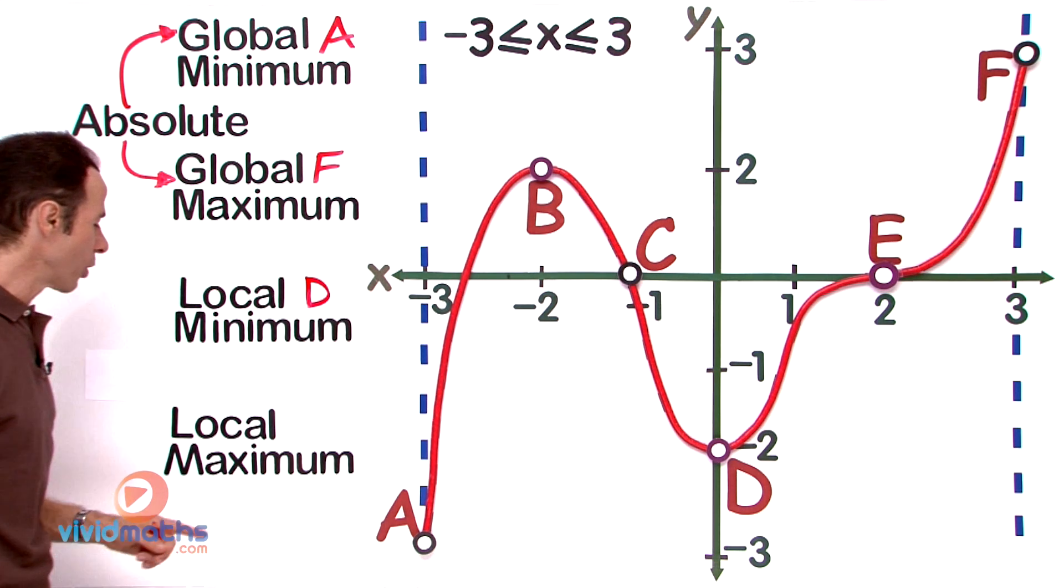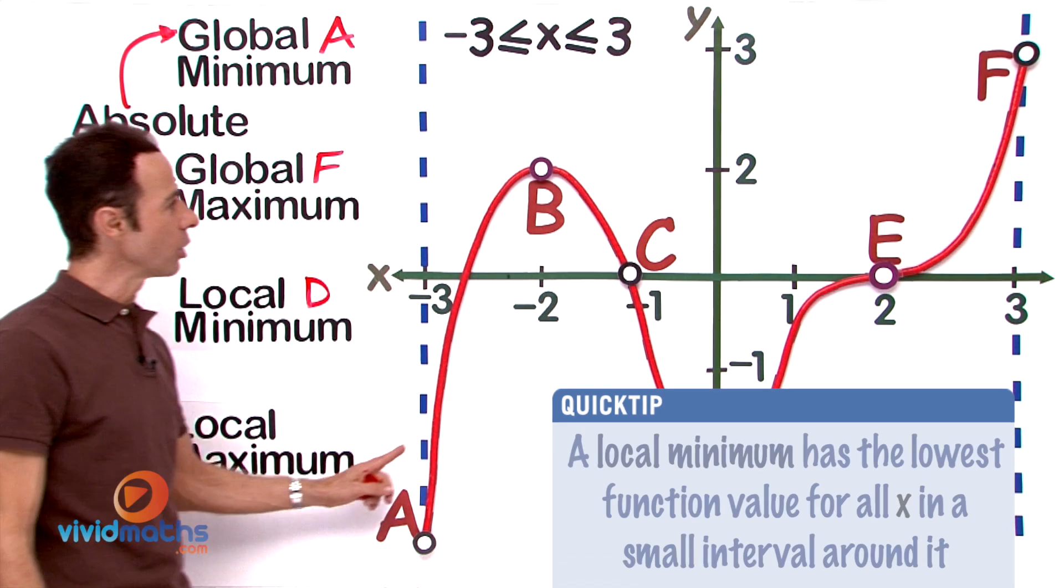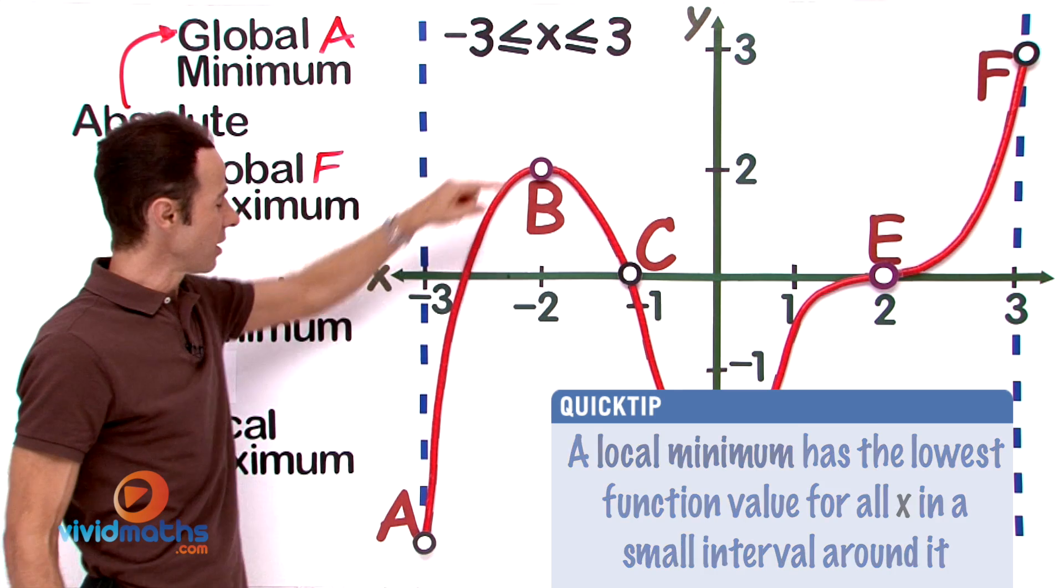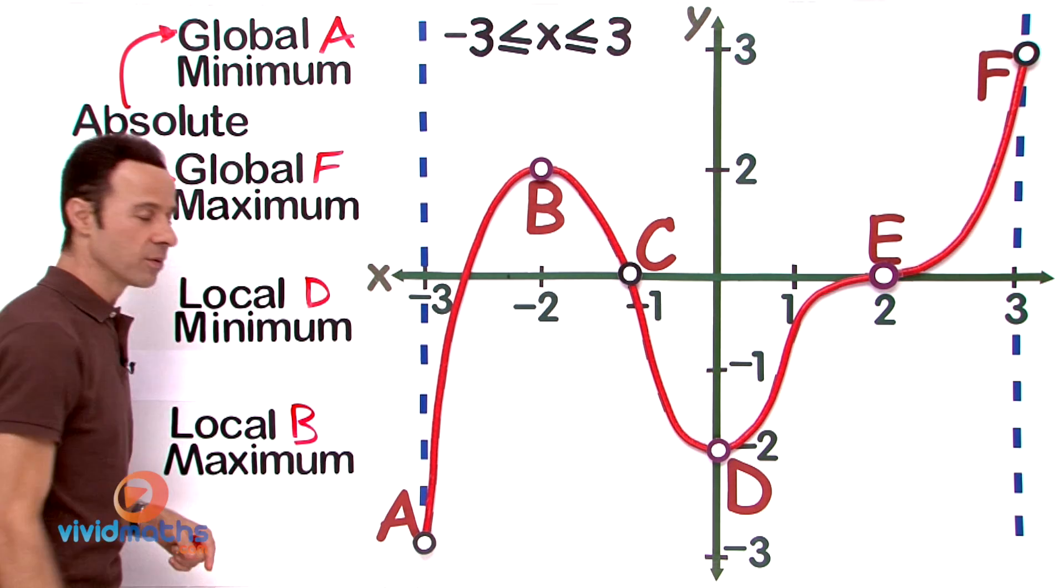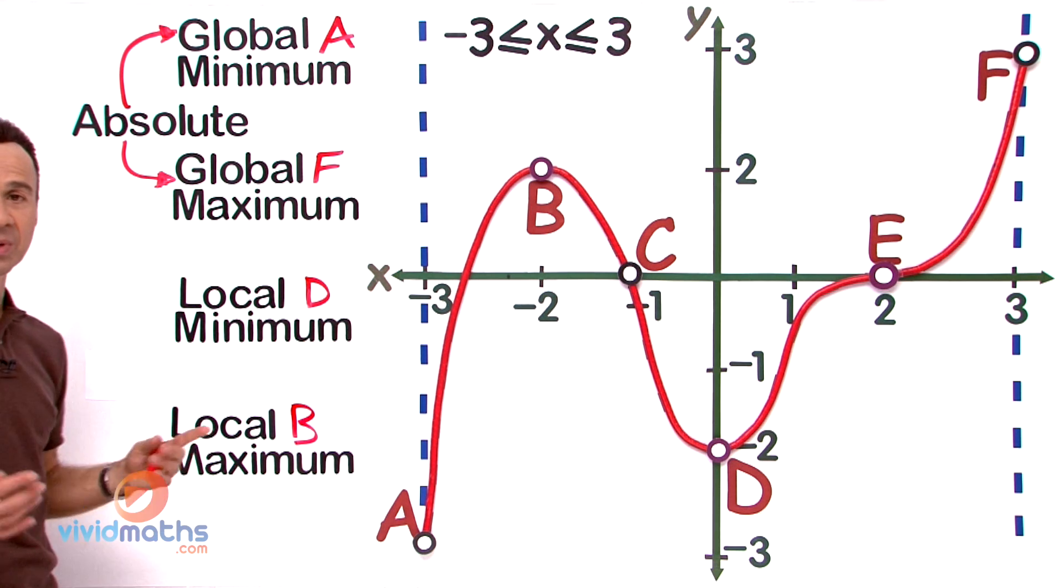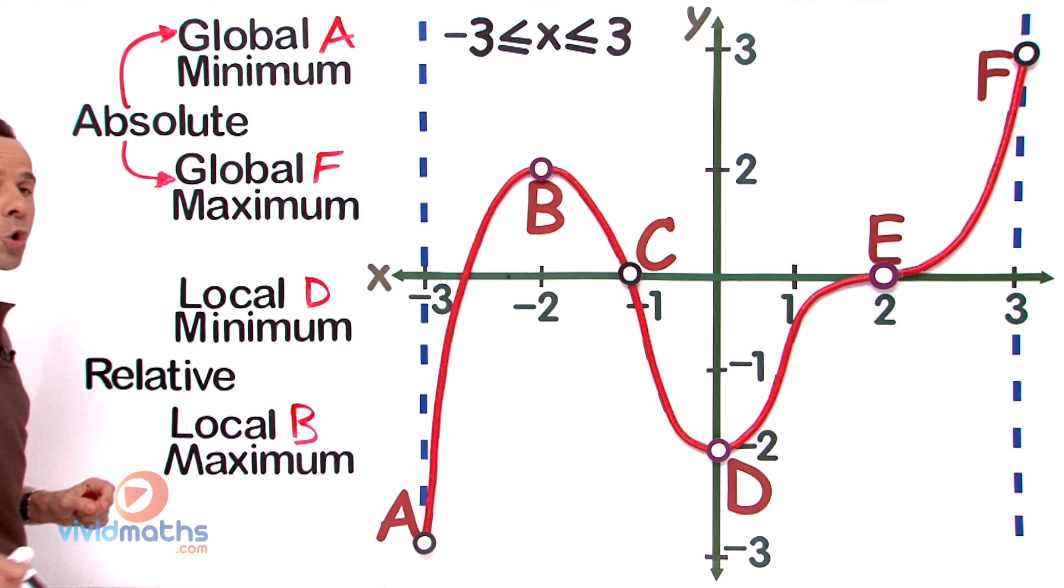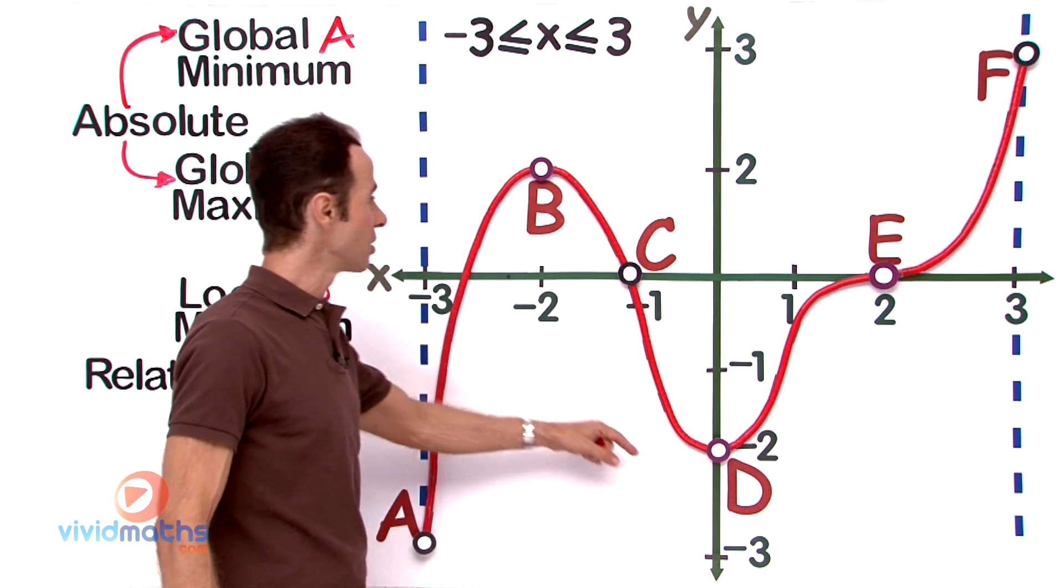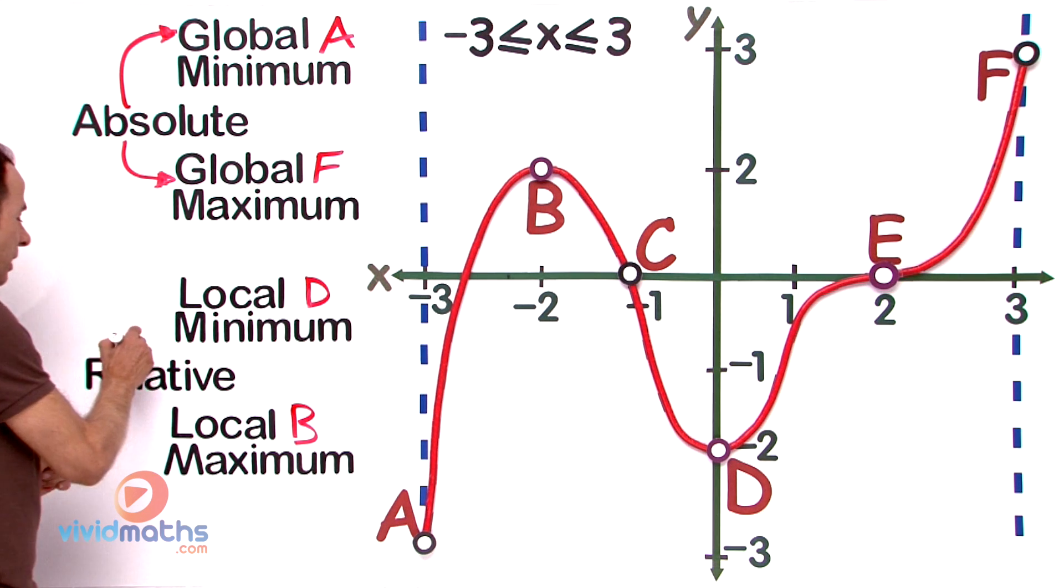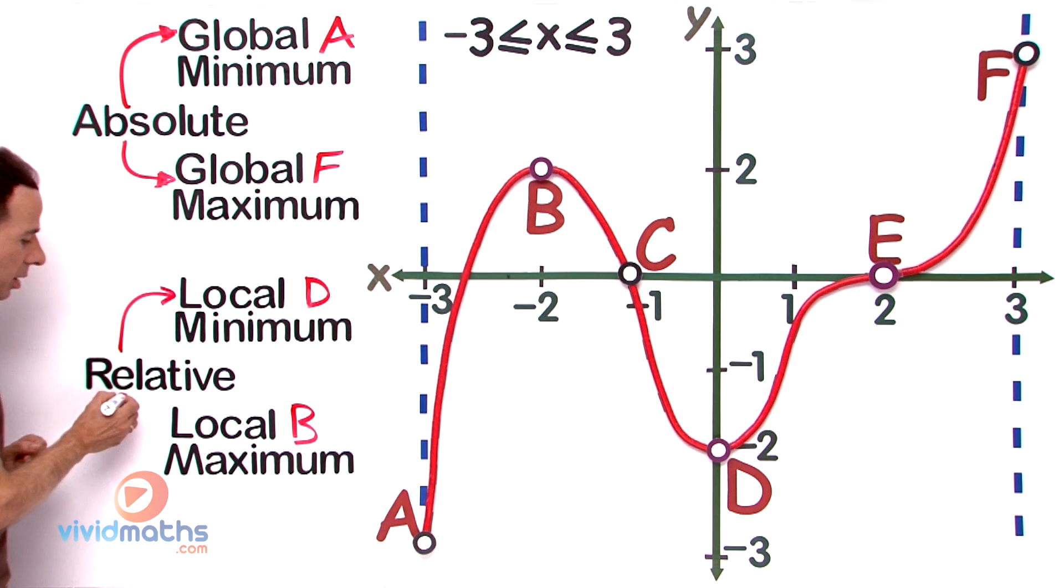Let us go for the next point—the local maximum. The local maximum is B right there. Now again, depending on your textbook, there is another word for local—some teachers and textbooks refer to local as relative. So this over here at D is a relative minimum, and this over here is a relative maximum right there at B. Local is the same as relative.